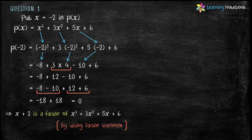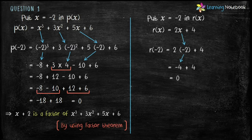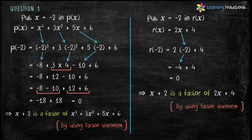So the value of polynomial is 0 at x equals minus 2. Now let's put x equals minus 2 in R(x). We get R(−2) equals 2 into (−2) plus 4 equals 0. So again the value of the polynomial is 0 at x equals minus 2. Therefore, x plus 2 is also a factor of 2x plus 4, by using Factor Theorem.